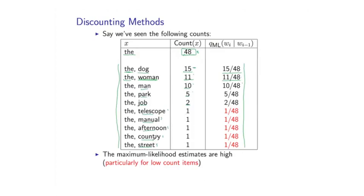And that's a rather informal description, but you can actually show rather more formally that these estimates are going to be systematically high. That's particularly true for these low count estimates. For example, the probability of street following there being 1 over 48 is going to be a rather high estimate in this case.